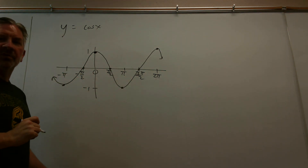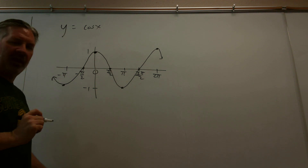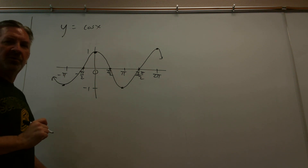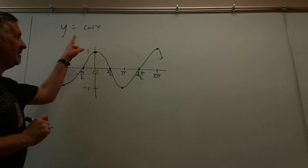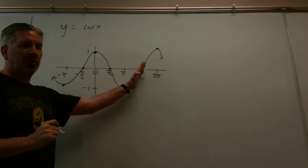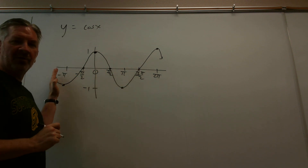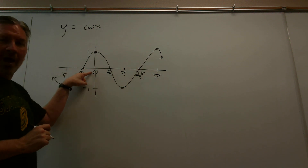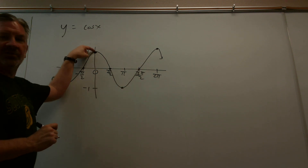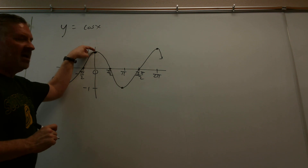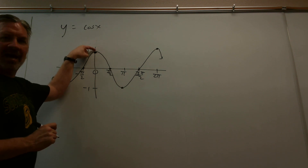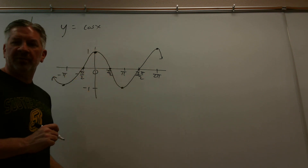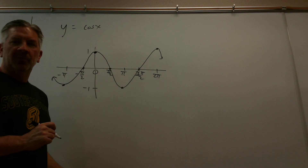To construct the cosine graph, we don't have to plot a bunch of points. Just remember the basic cosine graph: something important happens every pi over two radians. On the y-axis, the cosine graph crosses at (0, 1) — that's a high. So the next places are middles, and you can continue from there.